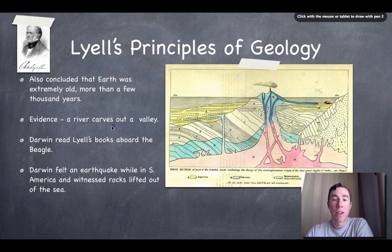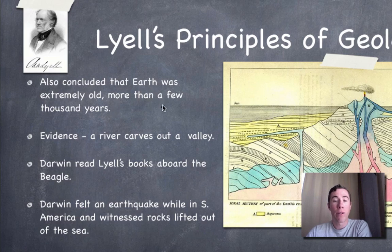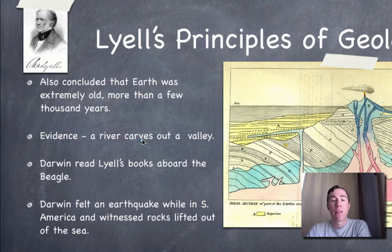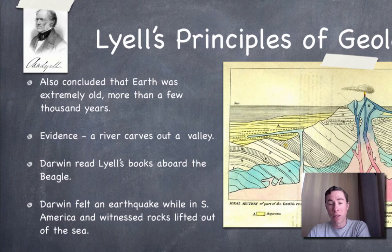With Lyell and his principles of geology, he also concluded that Earth was extremely old and had to be more than a few thousand years. His evidence was rivers carving out valleys — he argued that if a river carved out a valley, that couldn't happen over just a few hundred or a few thousand years; it had to happen over thousands, if not millions, of years. While Darwin was on the Beagle, he read Lyell's books. Remember that the Beagle is the ship that Darwin sailed upon.